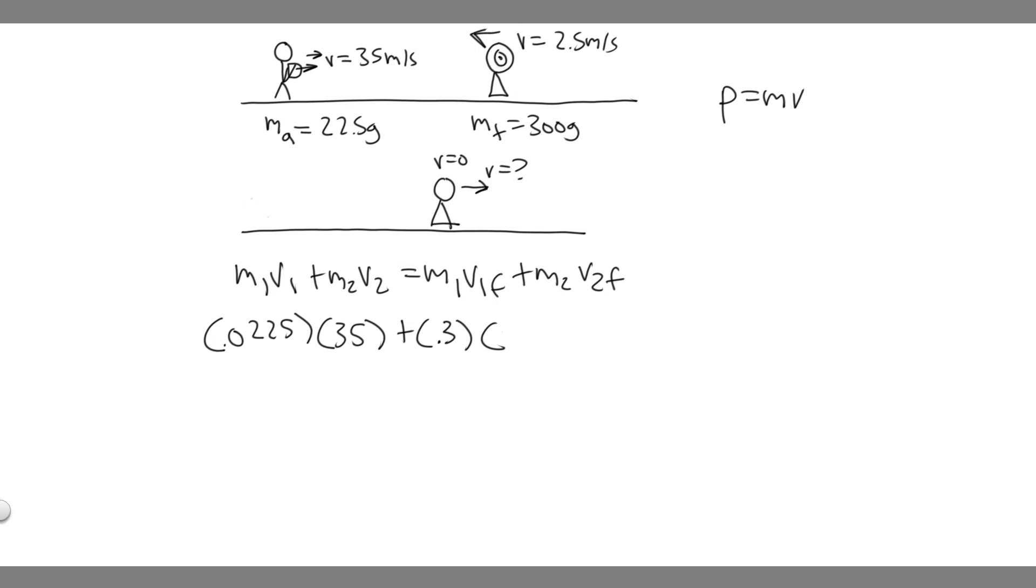v2 is 2.5 meters per second, but notice it's going this way, so it's to the left, therefore we have to say it's negative because we say the left's negative and the right's positive. That's why this number 35 is positive because it's going to the right and this is negative. That's the momentum of both objects before.